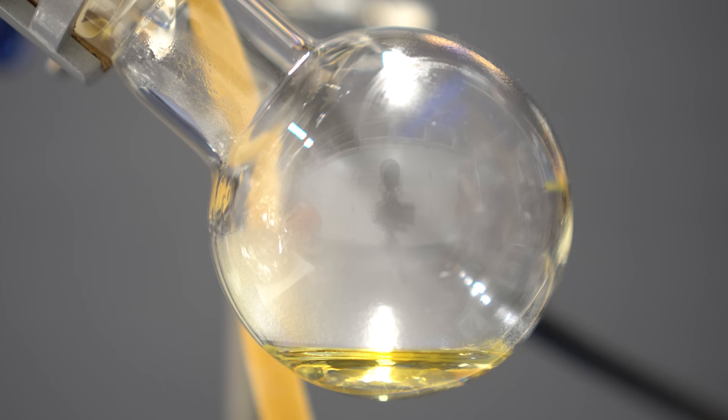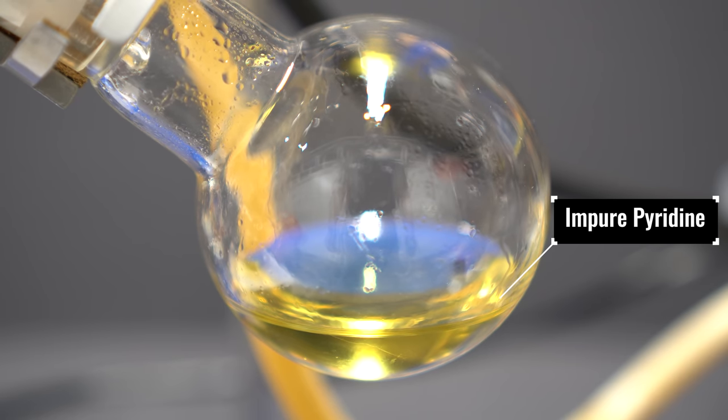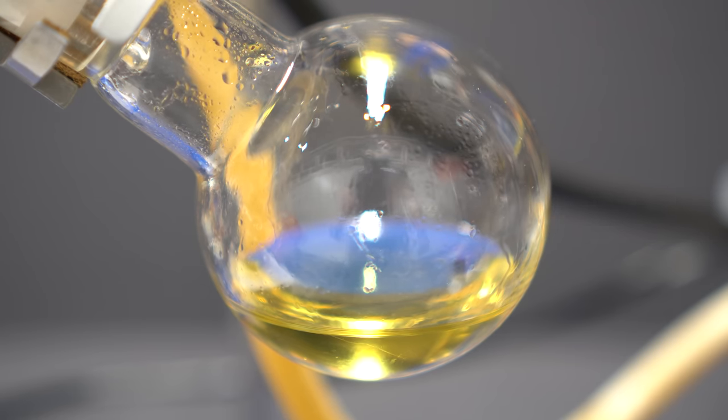The pyridine that comes over is not pure in any way, and there's an impurity that makes the solution look yellow. I say solution, as there's likely some water in there, and some impurities. When no more pyridine was coming over, I knew that I was done, and I could essentially go on to the next step.